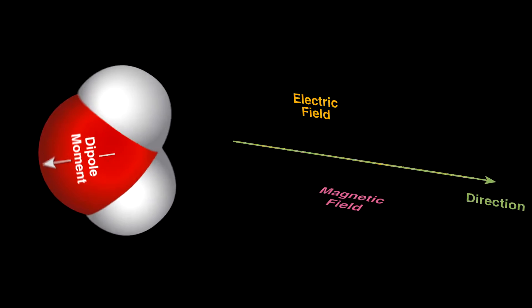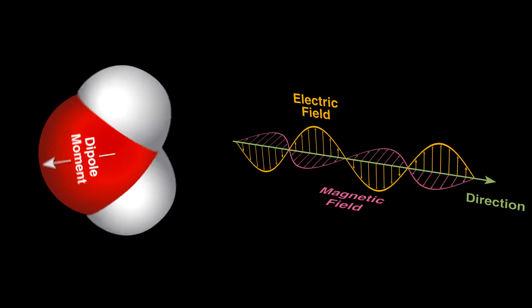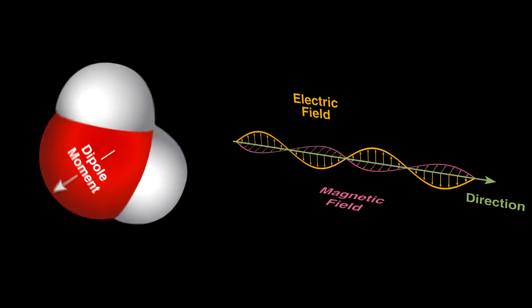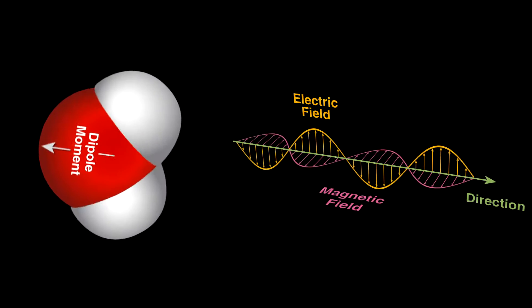Water will try to align with the radiation's electric field. The changing field rocks the water molecules back and forth rapidly, and molecular friction from this creates heat as the motion disrupts the hydrogen bonds between neighboring water molecules.